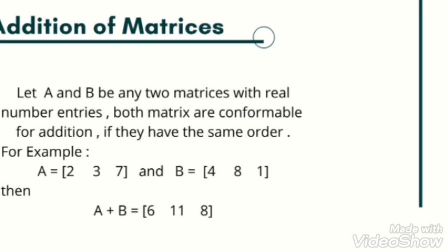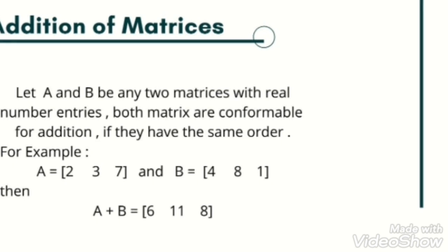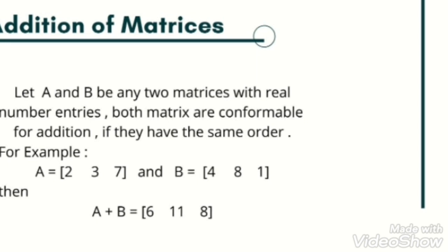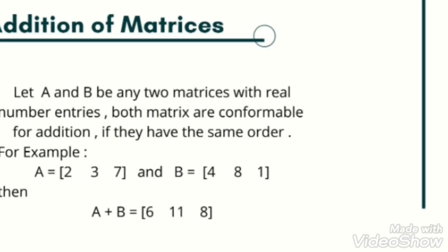For example, we consider two matrices: matrix A is [2 3 7] and B is [4 8 1]. First matrix has one row and three columns, so order of matrix A is 1 by 3. Similarly, the second matrix B has one row and three columns, so matrix B's order is 1 by 3. A and B both have the same order, it means both are conformable for addition.